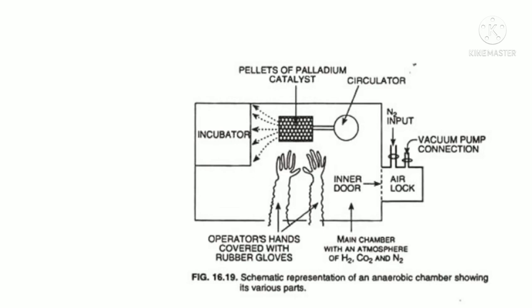This is a schematic representation of an anaerobic chamber showing its various parts. A side airlock is provided which can be evacuated or filled with nitrogen gas. It has a side door through which plates and stock cultures are placed inside the chamber, and through the inner door all plates and stock cultures are taken into the main chamber. The operators inoculate the plates in the anaerobic environment through rubber gloves. Gas is circulated through a heated palladium catalyst in order to avoid contact of oxygen with the cells.